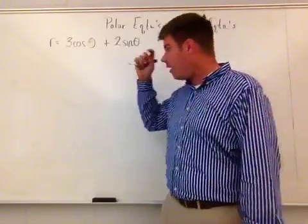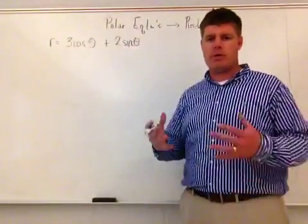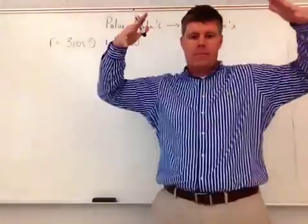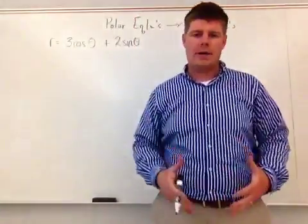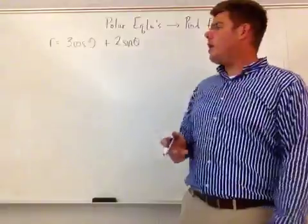And right now what I have here is r equals 3 cosine theta plus 2 sine theta, and I want to write this in rectangular form, which means I want to put this so that my equation is made up of x's and y's, not r with theta, because that would make it polar. So how do I do it?